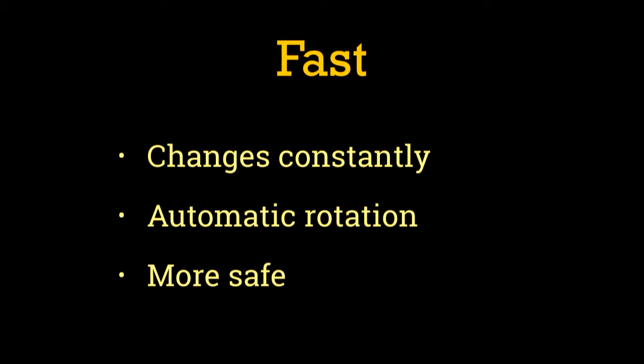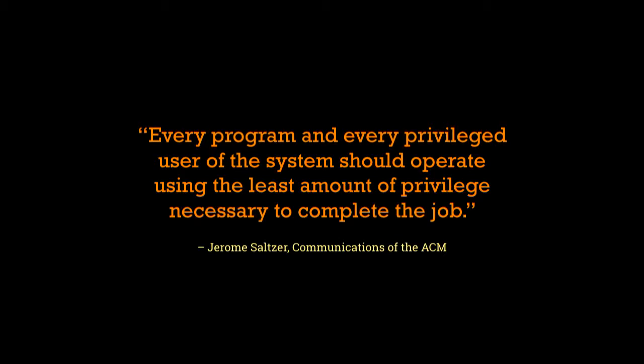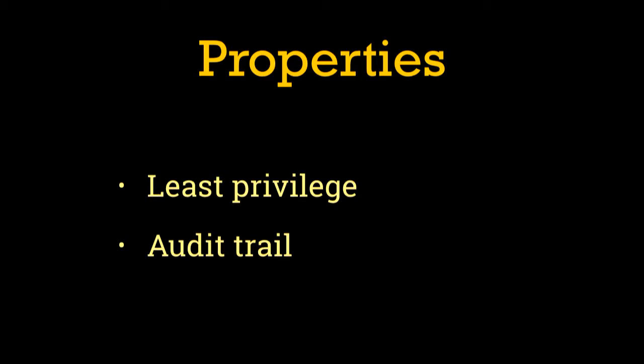Let's talk about properties of secrets management systems. The principle of least access or principle of least privilege is generally attributed to Jerry Saltzer in a 1974 ACM paper. In short, a service or tool should have access only to the secrets it requires and nothing else. Quality of every secrets management platform should always be judged on these two principles first: how well can it implement principle of least privilege, and how much audit information is recorded when something goes wrong. Something will go wrong at some point and you're going to want to know what was accessed, when, how, and where.